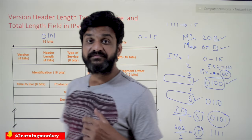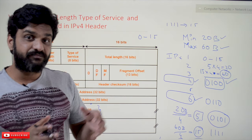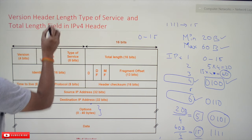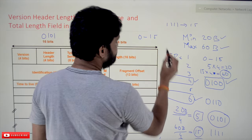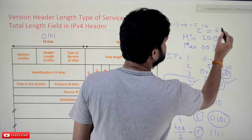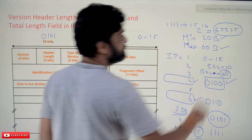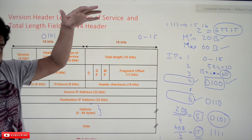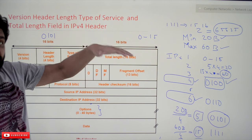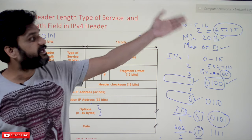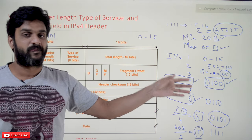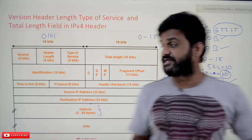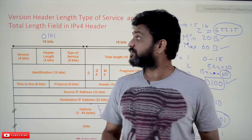The next field is Total Length, which is 16 bits. Total Length represents the length of the header plus the data. With 16 bits, the maximum value is 2^16 = 65535, meaning the total IPv4 packet — header plus data — cannot exceed 65,535 bytes. The Total Length field is represented in bytes, and this is the maximum size of an IPv4 packet.